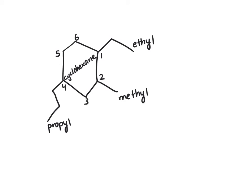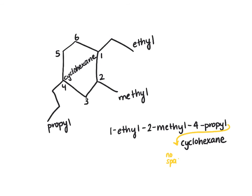So we're gonna put this whole name together. We have our numbers, we have our group names, we have our parent chain name. So we're gonna list alphabetically as we normally would. So ethyl is first alphabetically, so this is one-ethyl-two-methyl-four-propylcyclohexane. We're not going to actually have a space here, I just ran out of space when I was writing. So no space between the word propyl and cyclohexane.